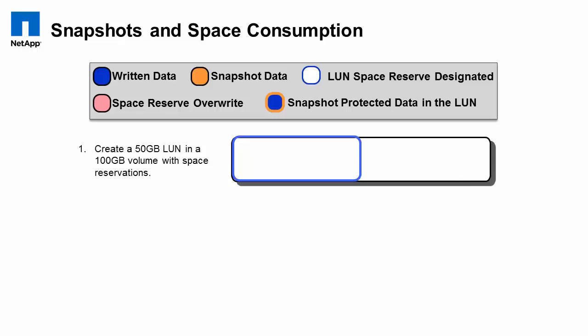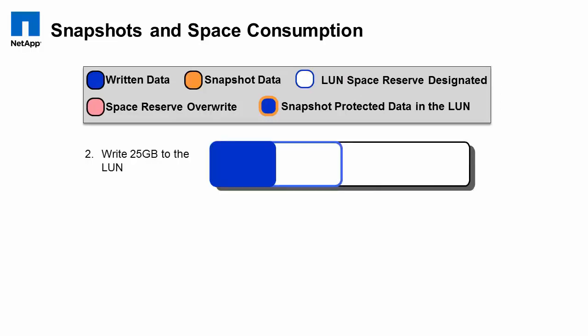We haven't really covered the fractional reserve topic, but we will shortly. As you can see, there's space designated in the volume, but there isn't actually any data written to the volume yet. So now we go ahead and write 25 gigabytes. In our 100-gigabyte volume, we've got 25 gigabytes of data written, so 75 gigs are effectively unused. But LUN space reservation has designated an additional 25 gigabytes.